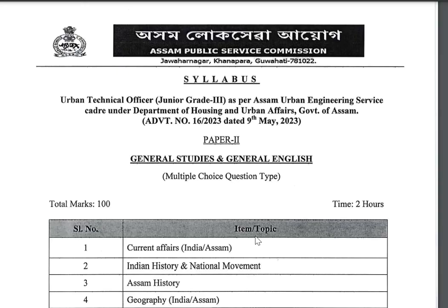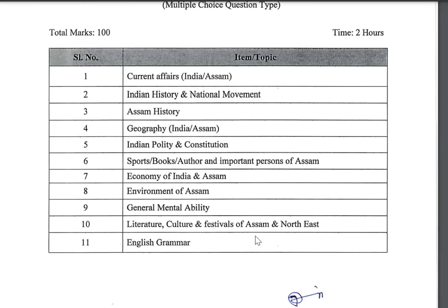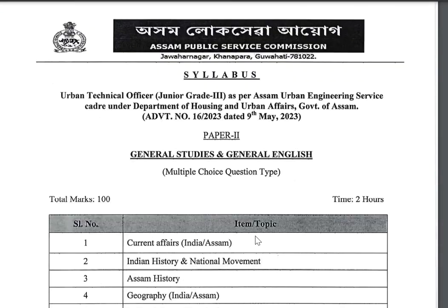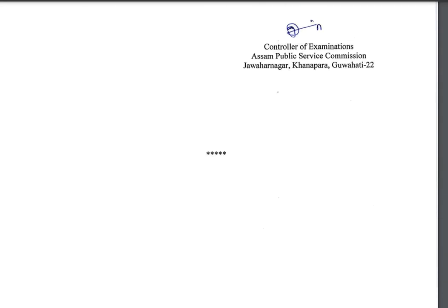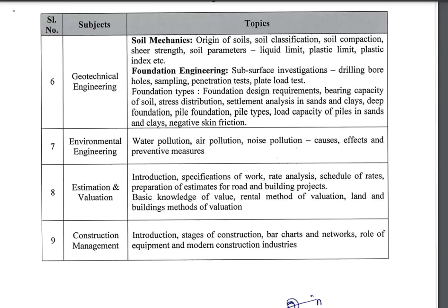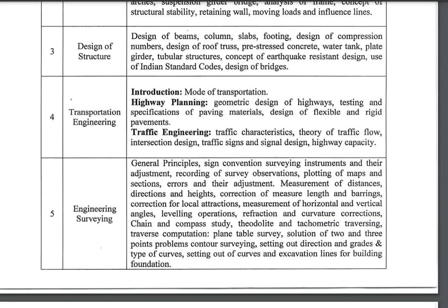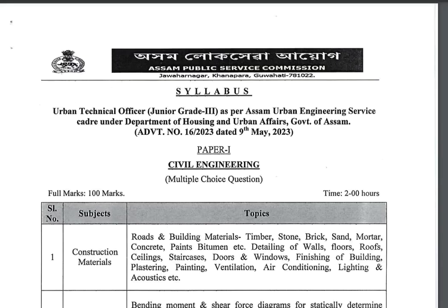The total is 200 marks across two separate papers. Paper 2 is General Studies and General English, and Paper 1 is mainly Civil Engineering related subjects. This is the Urban Technical Officer official syllabus.